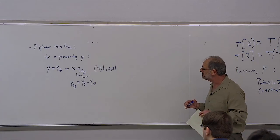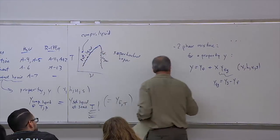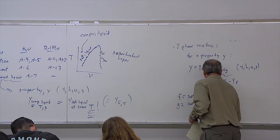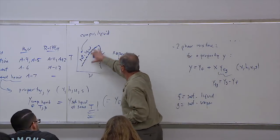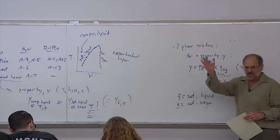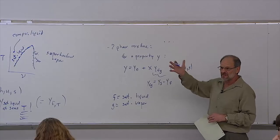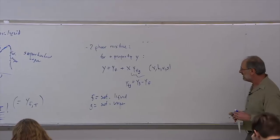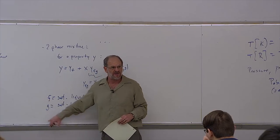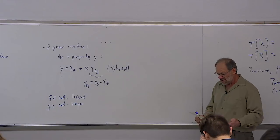F represents saturated liquid — all the data on the left-hand side of the saturation curve. G represents saturated vapor. At any particular temperature you can use tables A-4 or A-11, and at any particular pressure you can use A-5 or A-12. The first column will be saturated liquid data and the next will be saturated vapor data, or sometimes saturated liquid, then evaporation, then vapor. Note: some books use L and V instead of F and G — L for liquid, V for vapor.